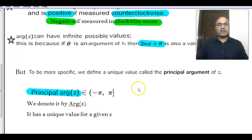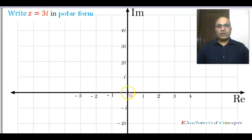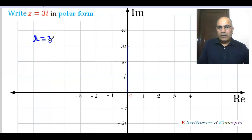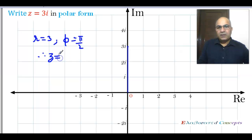Let us find the polar form of Z = 3i, doing it graphically first. We form a vector representing Z = 3i — it points along the positive Y-axis. It makes an angle of 90°, that is π/2, with the positive X-axis, and its length is 3 units. Therefore R = 3 and φ = π/2. So Z in polar form is 3(cos π/2 + i sin π/2).